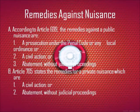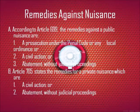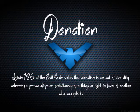The Remedies Against Nuisance: According to Article 699, the remedies against a public nuisance are: a prosecution under the penal code or any local ordinance, a civil action, or abatement without judicial proceedings. On the other hand, Article 705 states the remedies for a private nuisance, which are: a civil action or abatement without judicial proceedings.